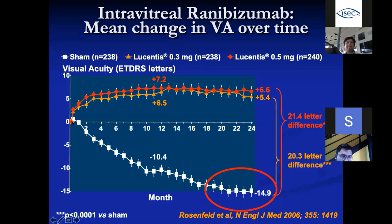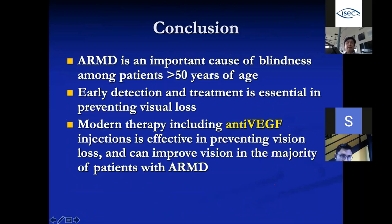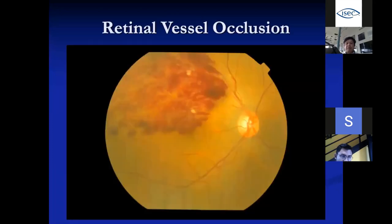If you do not treat AMD, there is significant vision loss — after two years the differential between treated and untreated is almost 20 letters. In conclusion, AMD is an important cause of blindness, easily detected with OCT, and treatment with anti-VEGF is very effective. Therefore the responsibility sometimes falls on you to pick it up when patients come for review and to send them to the eye doctor. In doubt, always send to the eye doctor.